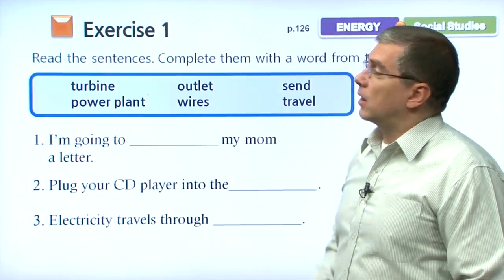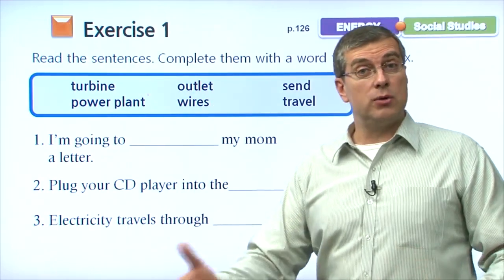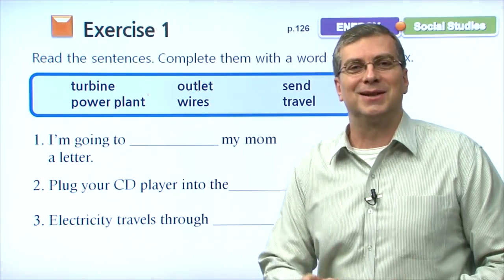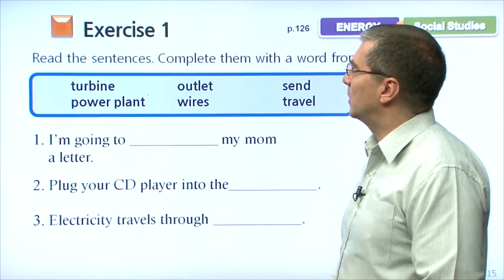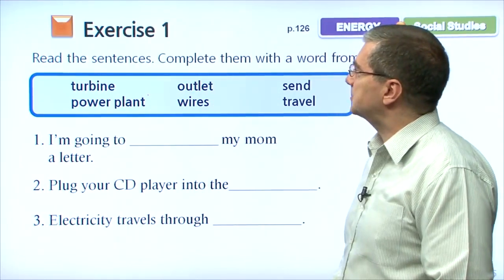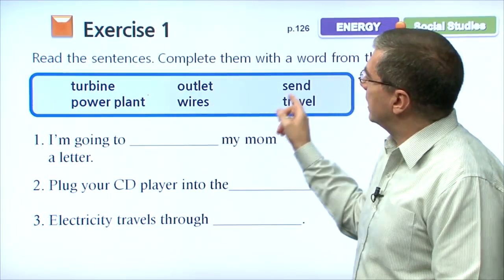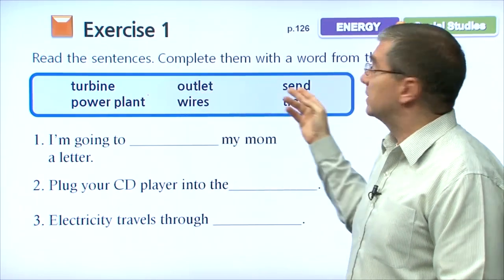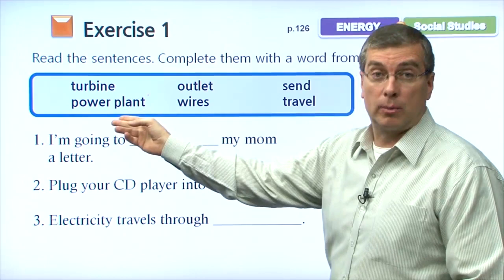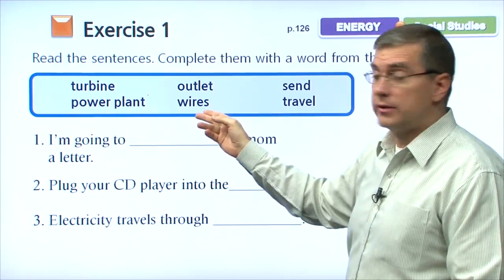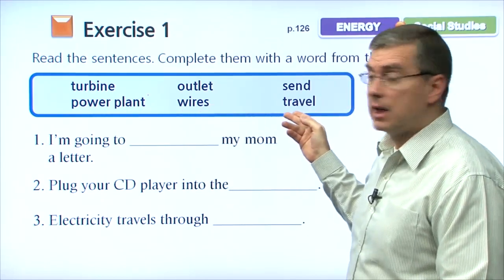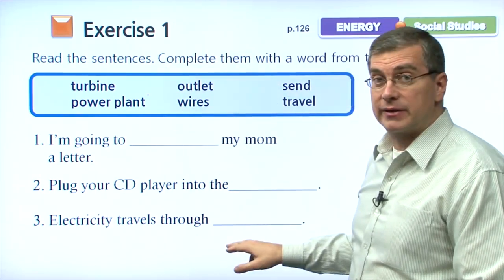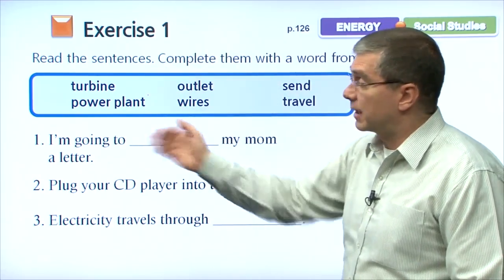Here we are at Exercise One. Let's review the words that we've learned and put those words into sentences. In the word bank, we have turbine, outlet, send, power plant, wires, and travel. We need to use some of these words in the blanks. Let's look at the sentences.